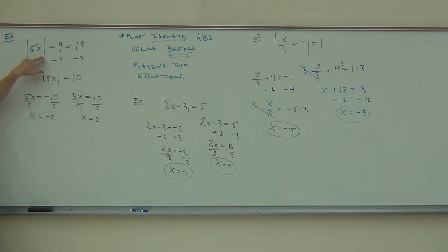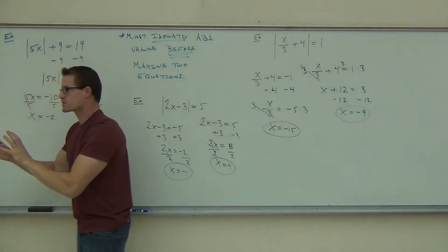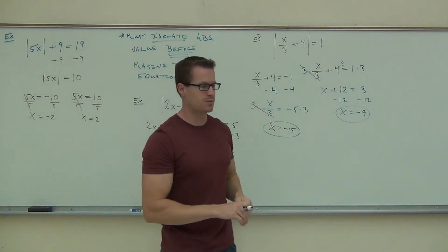Notice how the absolute value is only associated with this, that plus 9, that would not have worked if we would have set up the two equations without subtracting 9 first. That would have been a big problem.